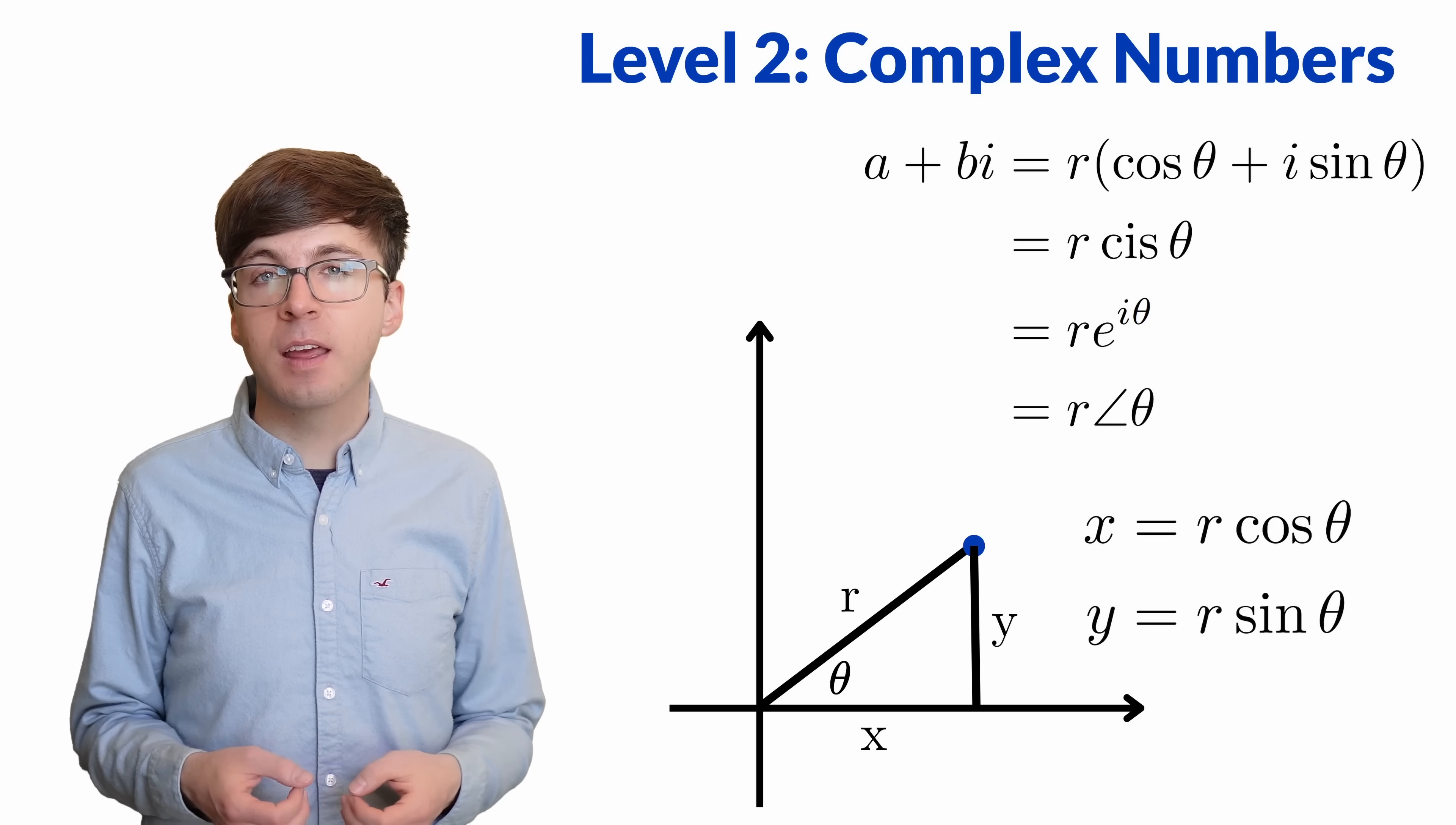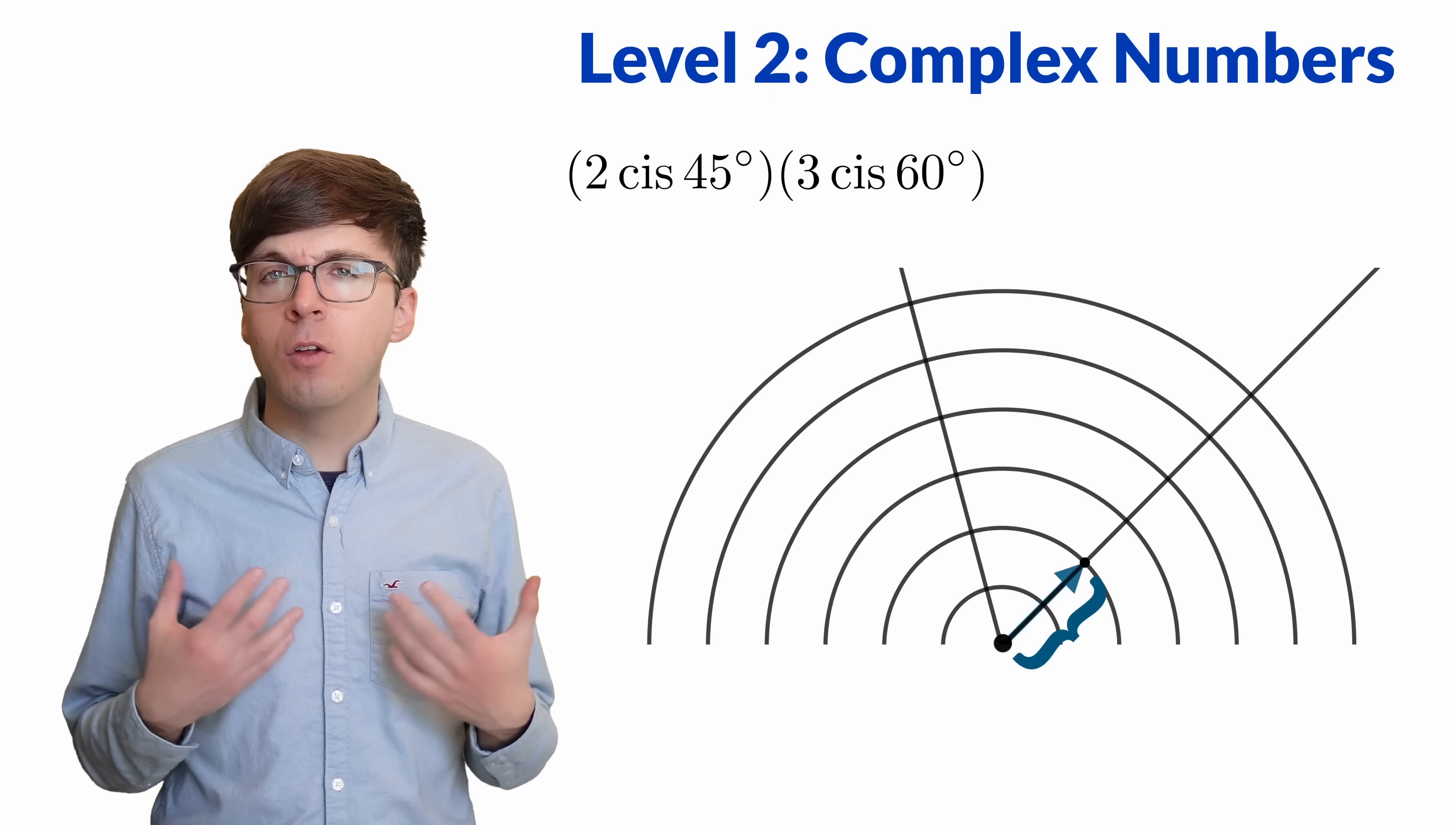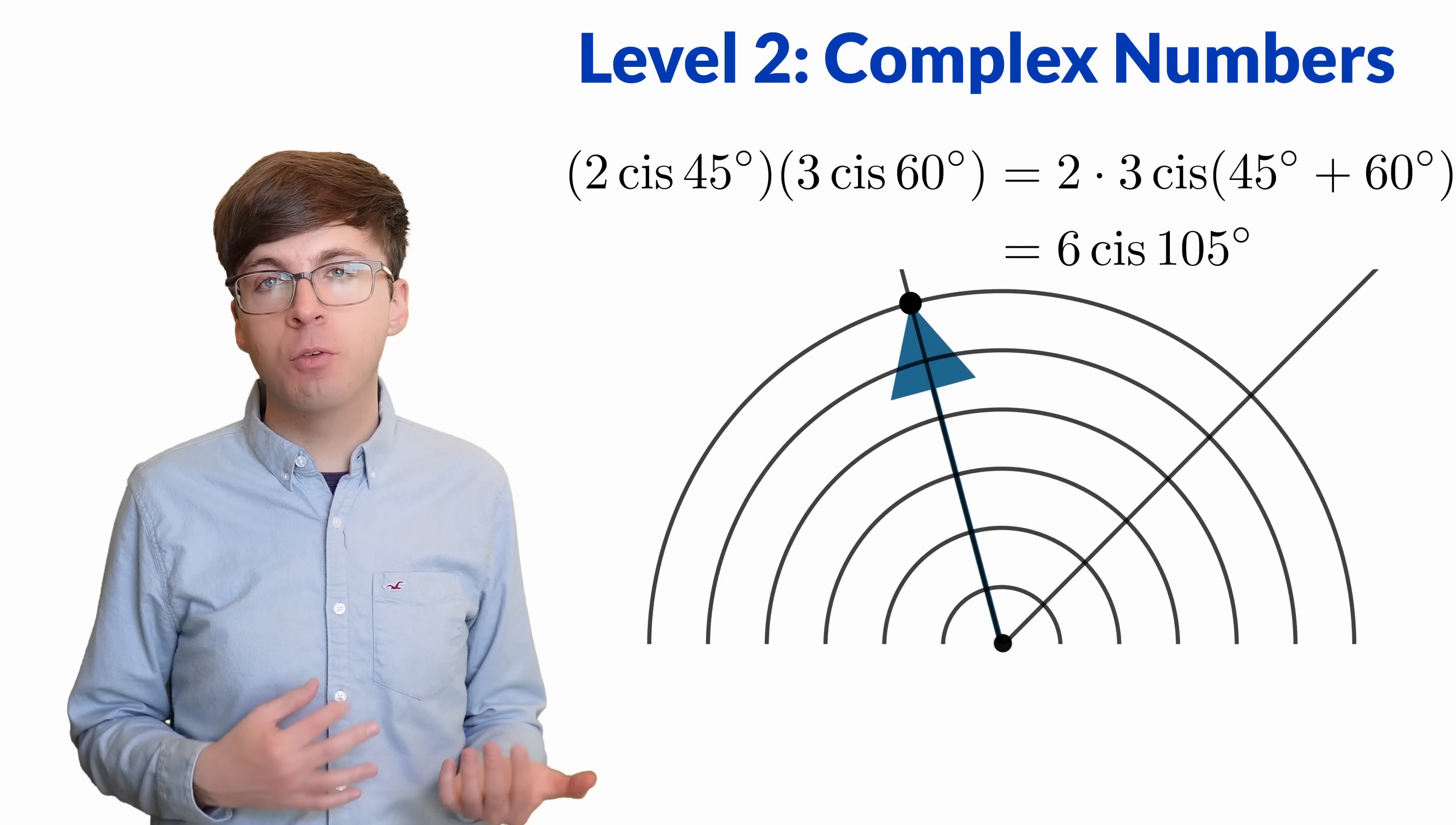In polar form, we can see more clearly how complex multiplication works. Say we want to multiply 2 cis 45 degrees by 3 cis 60 degrees. The first number is a distance 2 from the origin along a line at a 45 degree angle with the x-axis. And 3 cis 60 degrees is the point that's a distance 3 from the origin along the line that makes a 60 degree angle with the positive x-axis. To multiply these, we multiply the 2 and the 3 to get 6, and then we add the angles 45 and 60 to get 105 degrees. We multiplied the radii and added the angles. The formula to multiply complex numbers is actually really nice. It's just more natural in polar form.